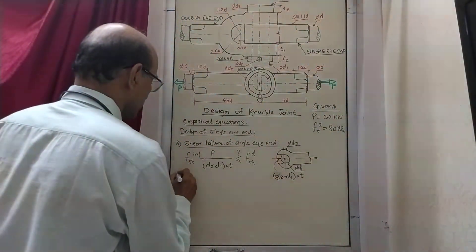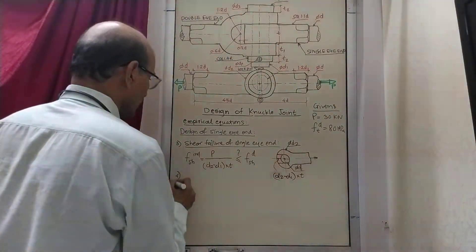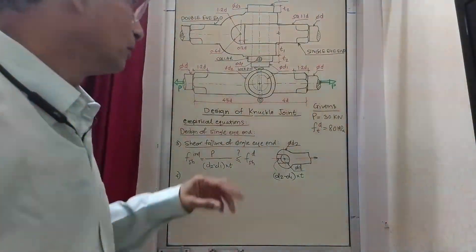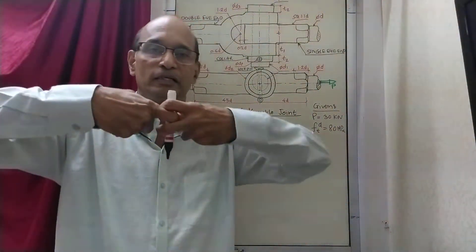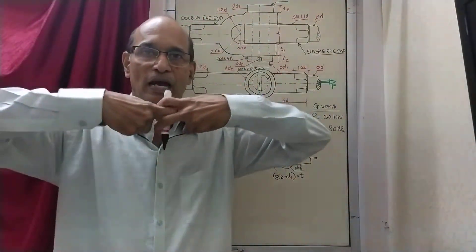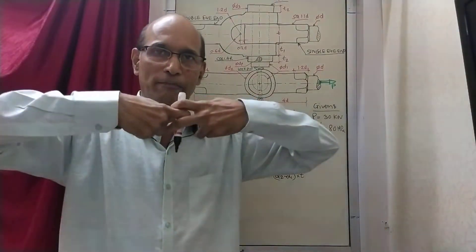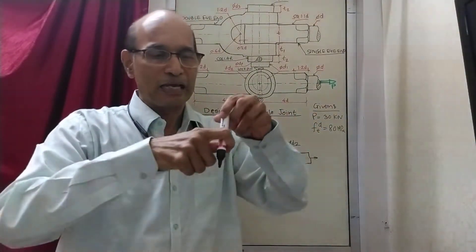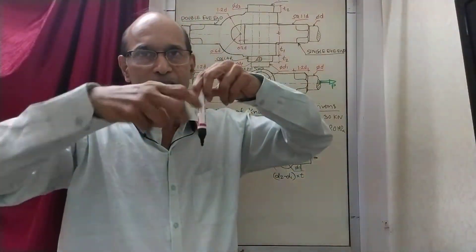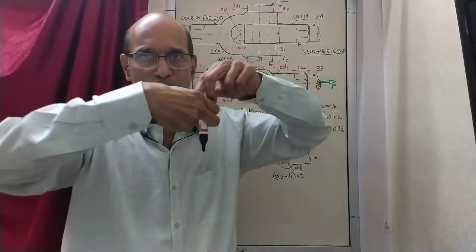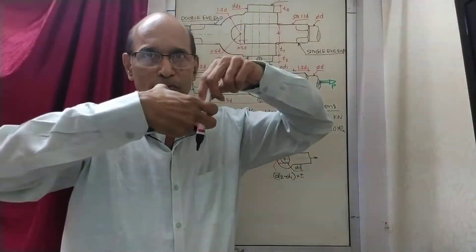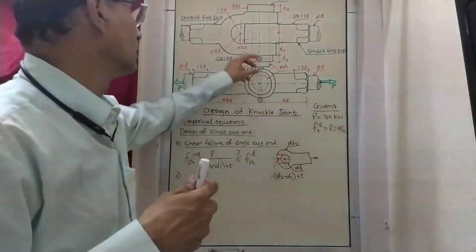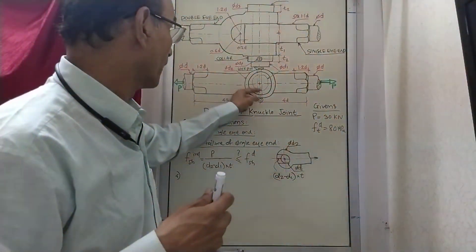Next, from where else can the joint fail? There is a pin fitted inside the hole. When load is applied, between the pin and the curved surface of the hole there is going to be a contact stress — a bearing stress — at the contact point. This is the next failure mode to be checked.